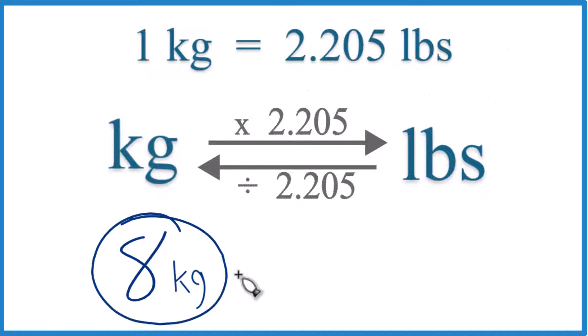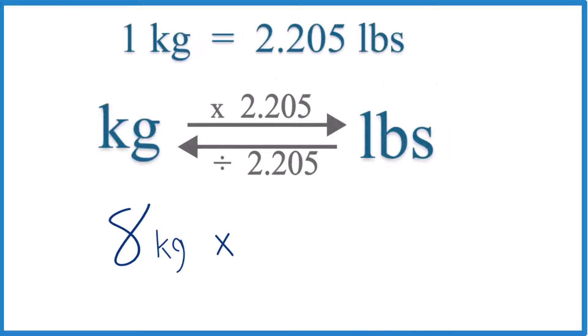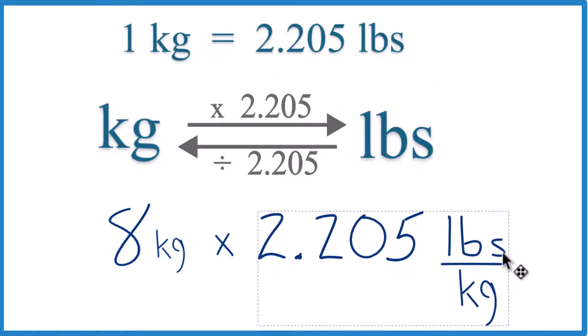Since we have eight kilograms here and we want pounds, we're going to multiply by that 2.205 number. So we have kilograms on top and on the bottom because this 2.205 number is 2.205 pounds per kilogram. That came right from our conversion factor.